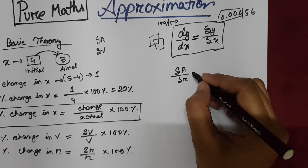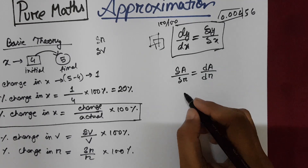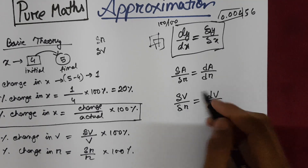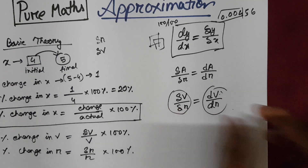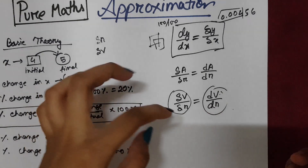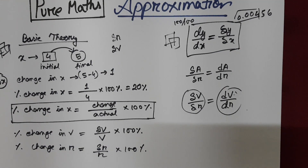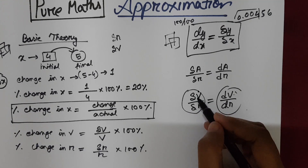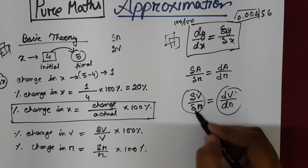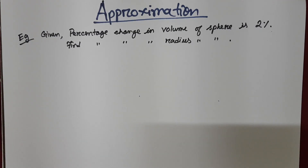So if I write del a by del r, it will be equal to da by dr. Similarly, del v by del r can also be written as dv by dr. Both the del and d notations represent the same thing — the change in volume with respect to radius. You just need to make sure that if volume is at the numerator on one side, volume must be at the numerator on the other side too, and the same for the denominator.